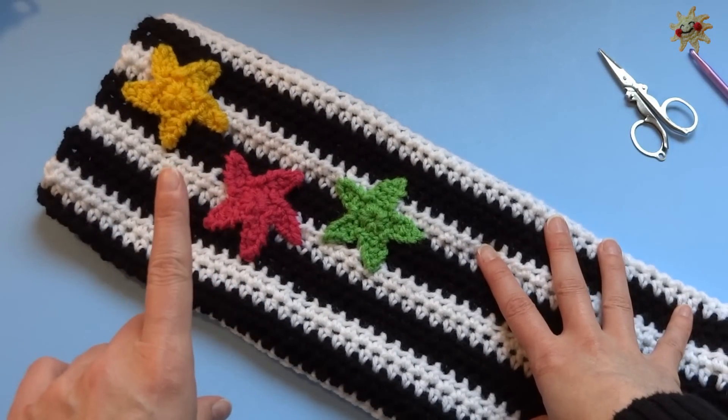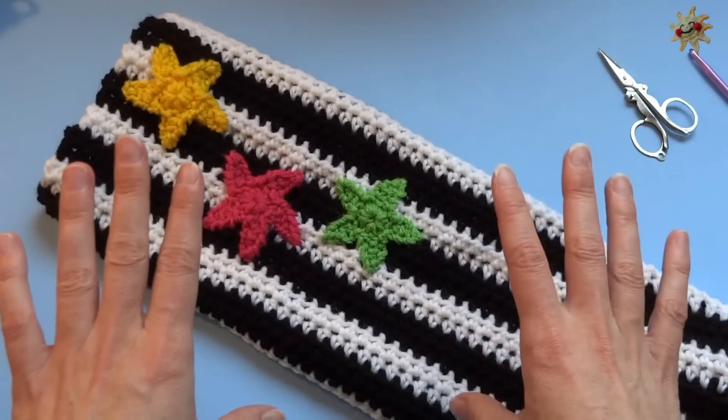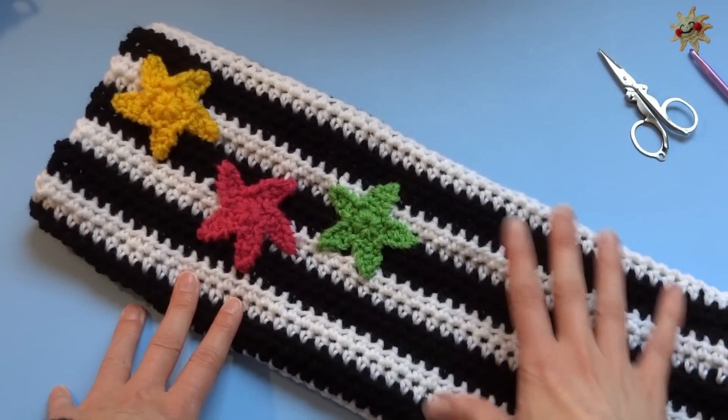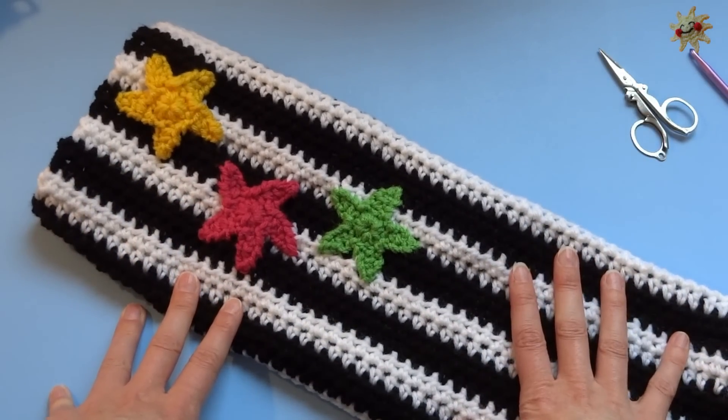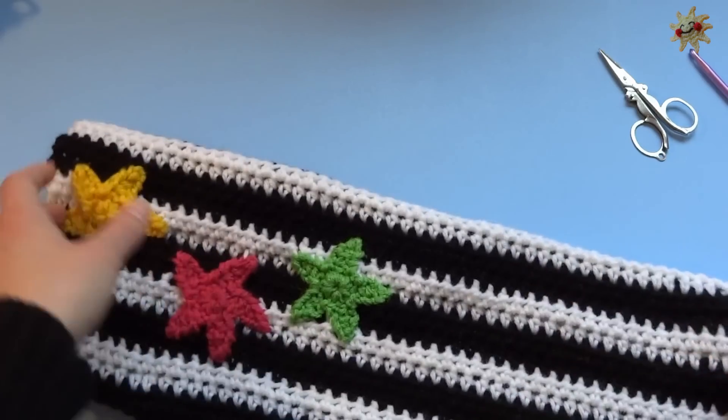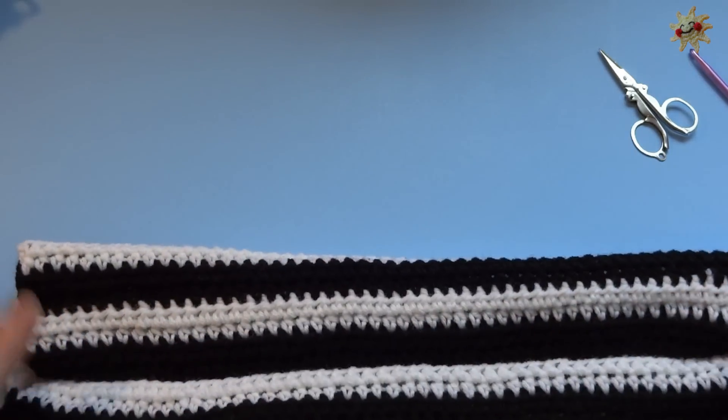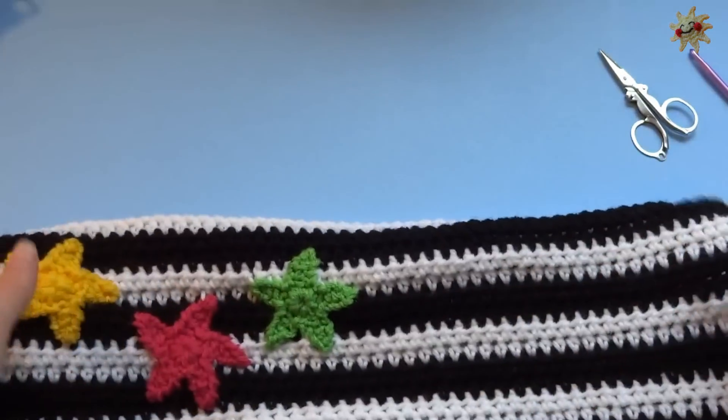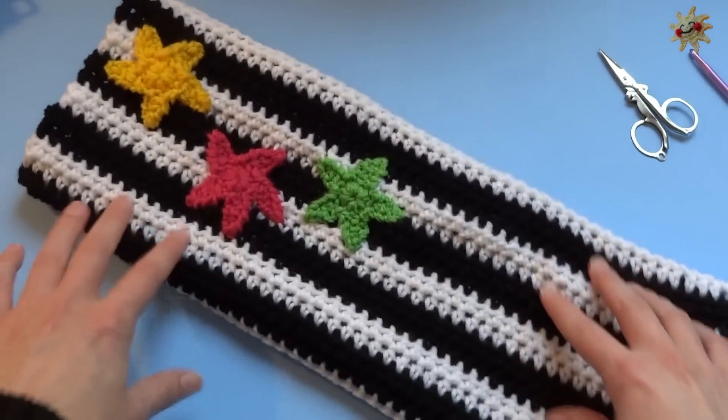And remember, because leg warmers are pretty much just tubes, they are mirror opposites of each other. So you don't have to do anything differently in the body of it. You just want to make sure that you put your stars on the opposite side. And if you have done it this way, where you can't really determine where the seam is, then it doesn't really matter where you put them. They can be absolutely identical. It's just all in how you put them on.